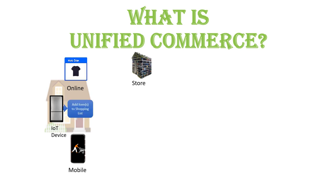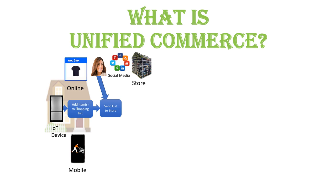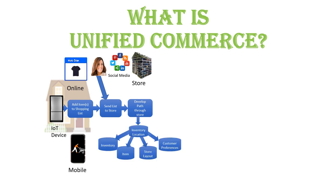Unified Commerce starts adding things like IoT devices. In this case, your refrigerator in your home has found out that you are low on eggs, so it adds eggs to your shopping list. Now you have things from the website, mobile, and IoT devices. And when you are ready, you have the shopping list sent to the store.